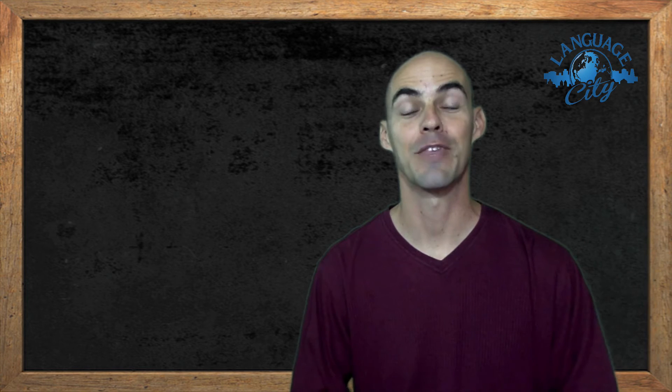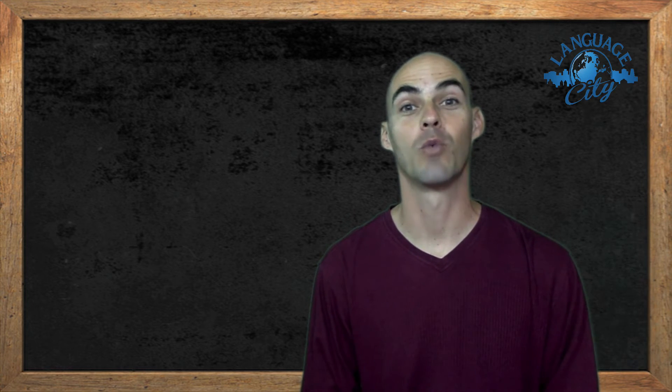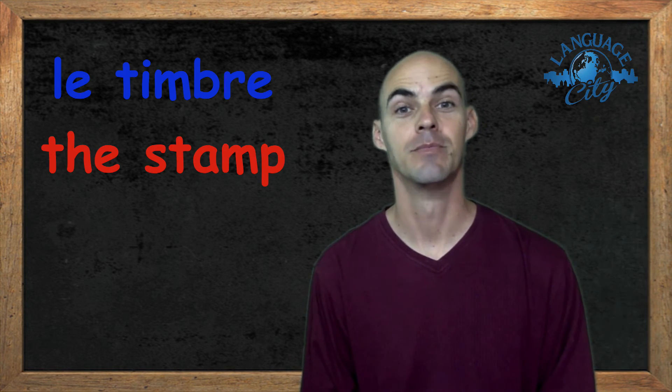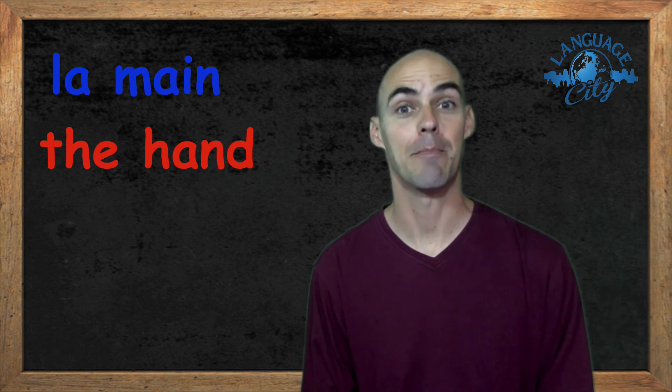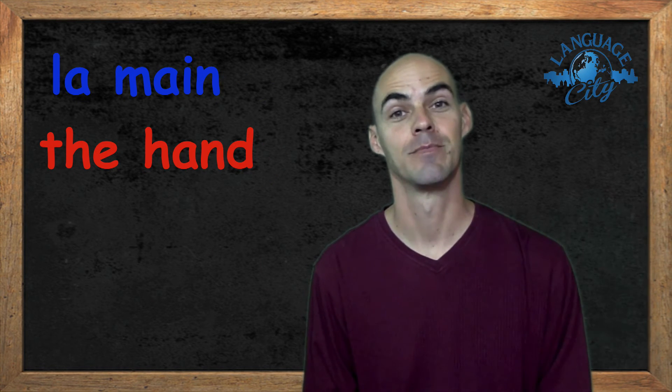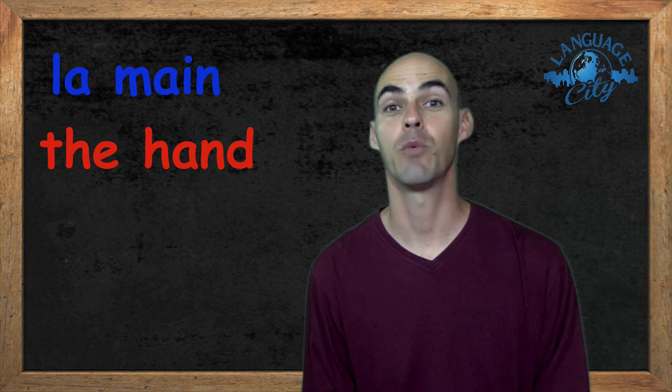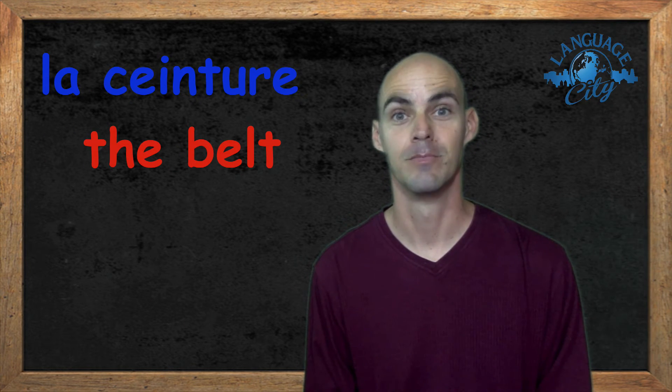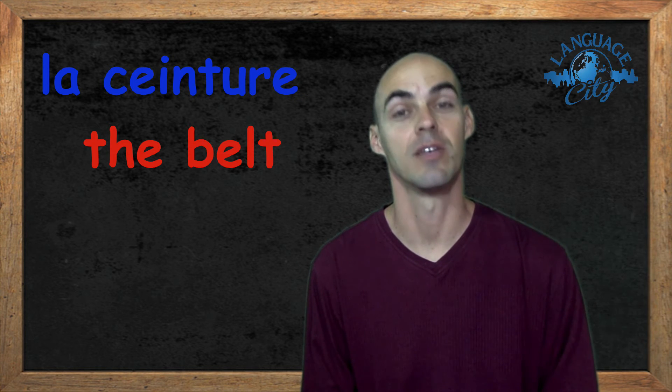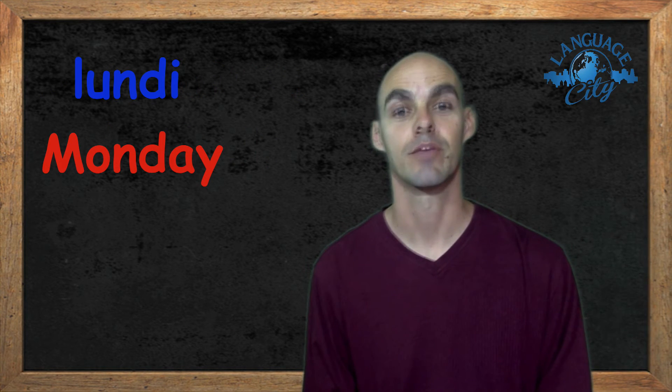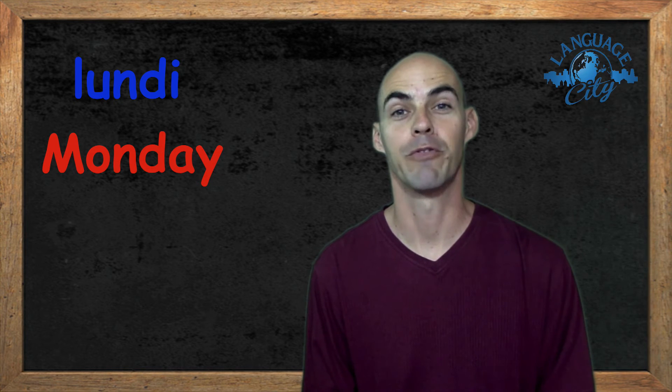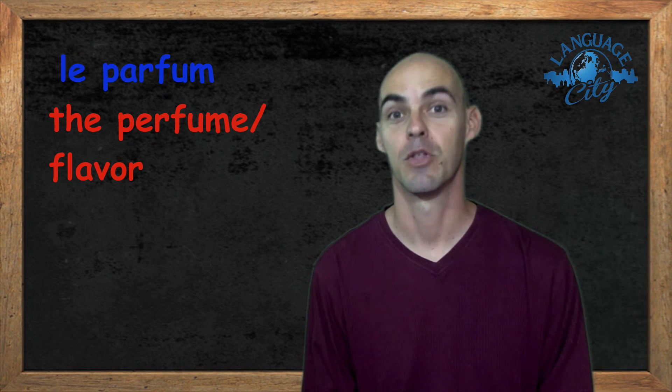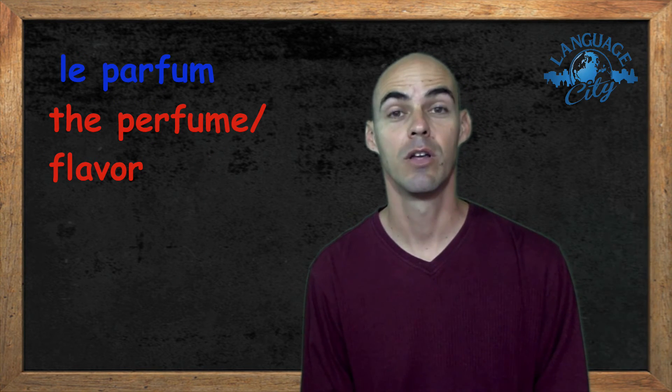Alright, let's go over the answers now. Word number one was le timbre, the stamp. Word number two was la main, the hand. Word number three was la ceinture, the belt. Word number four was lundi, Monday. Word number five was le parfum, the perfume or the flavor.